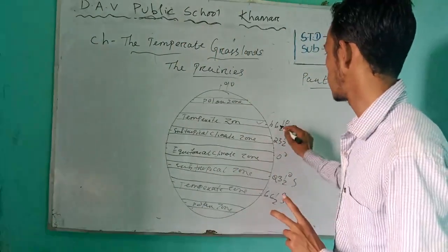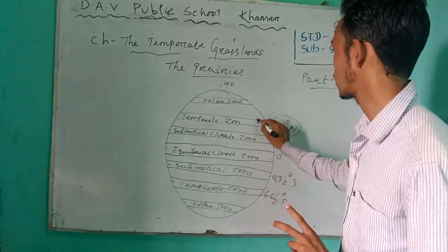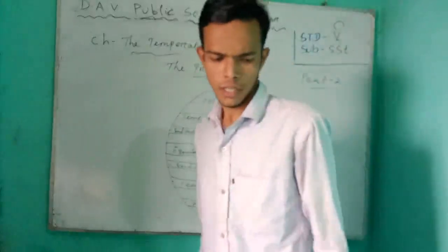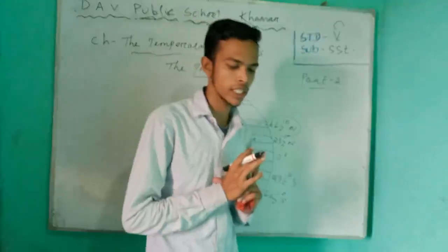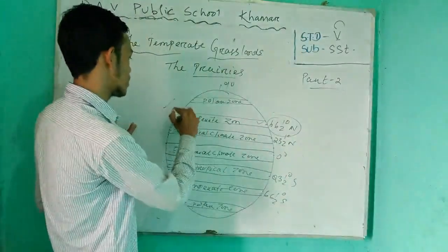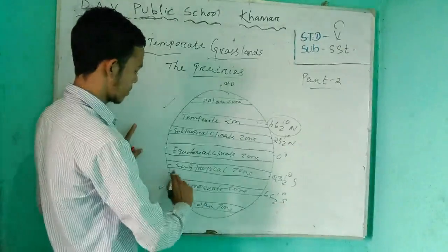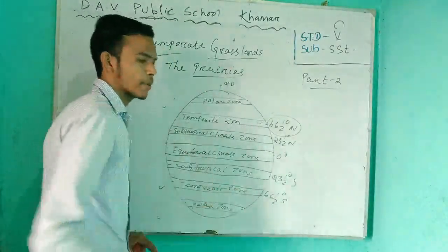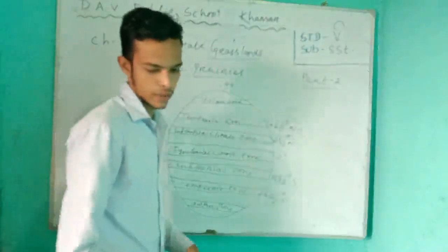Where in the temperate zone? At 66.5 degrees north — meaning around 60 to 70 degrees. It is locating in 60 to 70 degrees in the temperate zone, in both northern and southern parts. That is where the grassland is locating.